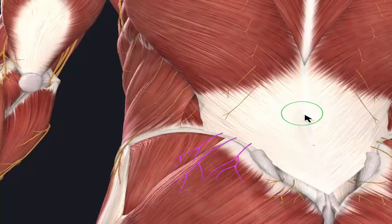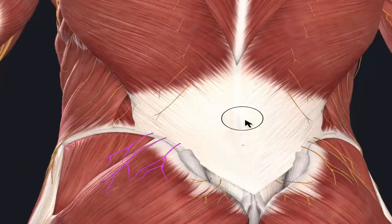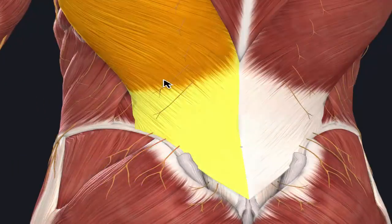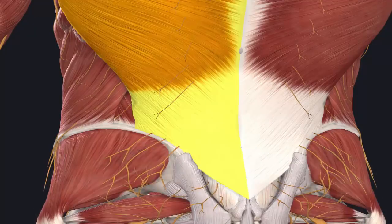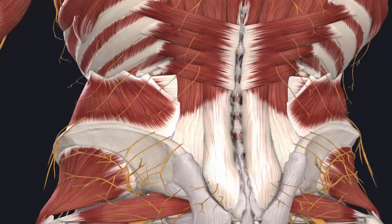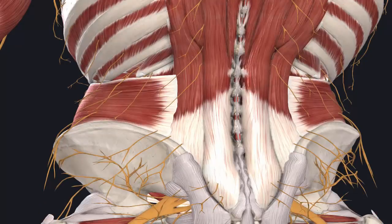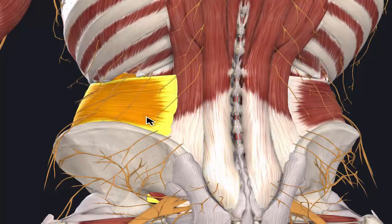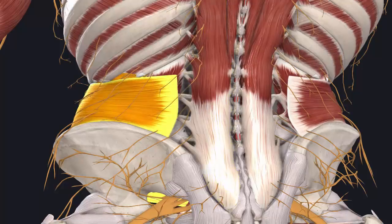We're going to move past our lats — the latissimus dorsi — which build into what's called the thoracolumbar fascia. Moving all these big muscle groups out of the way and going down into our deeper layers, we have the erector spinae muscles and core muscles like the transverse abdominus. These muscles can go into spasm, but those are just symptoms.